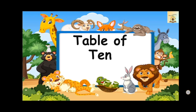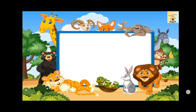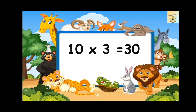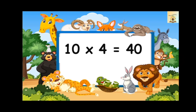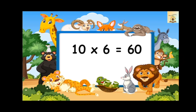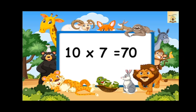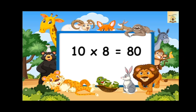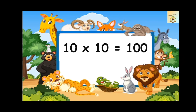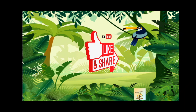Table of ten. Ten ones are ten. Ten twos are twenty. Ten threes are thirty. Ten fours are forty. Ten fives are fifty. Ten sixes are sixty. Ten sevens are seventy. Ten eights are eighty. Ten nines are ninety. Ten tens are one hundred.